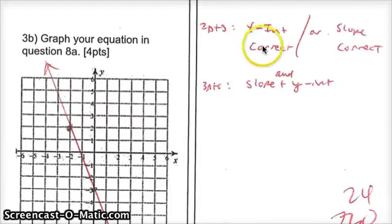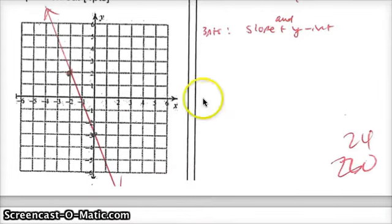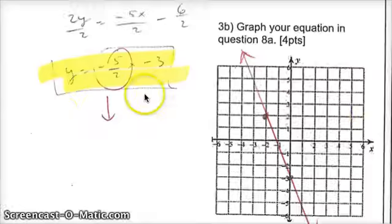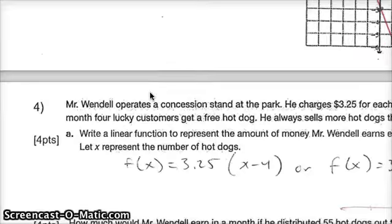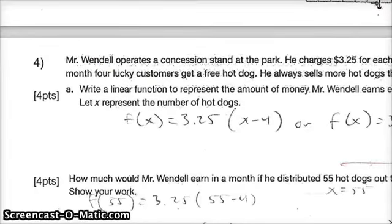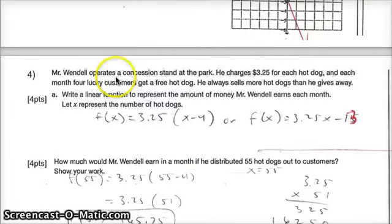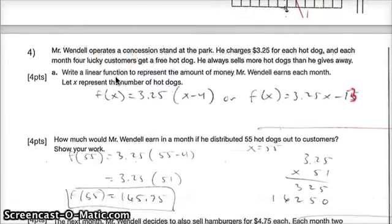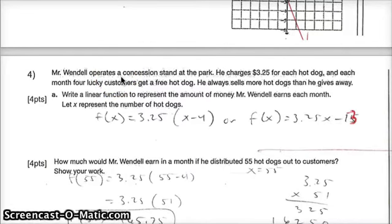Remember, if you get the y-intercept in that problem correct, it'll give you 2 points. Or if you have the slope is correct, it'll give you 2 points. If you have a slope and a y-intercept correct, but your graph is not, it'll give you 3 points out of 4. That side was out of 24. Let's go ahead and turn to the back side.